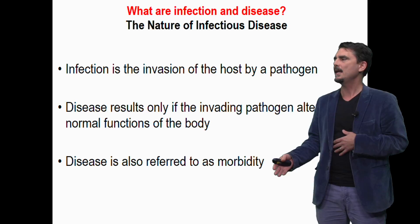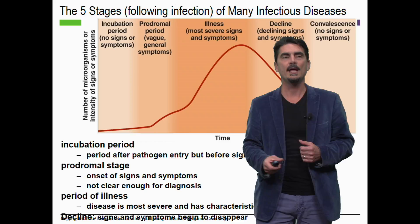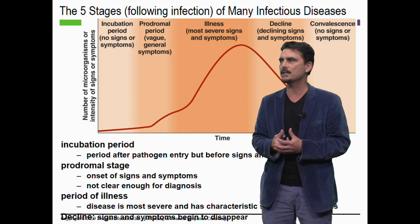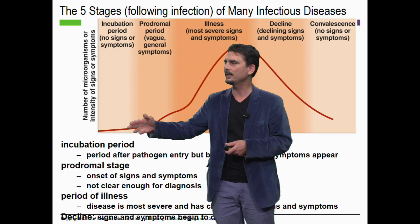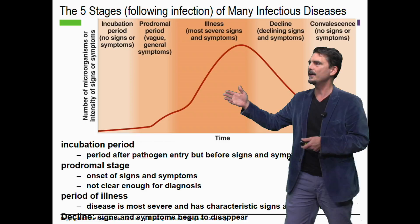When you have disease, that's also called morbidity. One of the exercises we'll look at in this class is the morbidity and mortality weekly reports from the CDC. Going back to the image of the five stages of many infectious diseases — from the incubation period, where there are hardly any microorganisms and no signs or symptoms, through the prodromal and illness stages — what's going on for the microbe to reach very high numbers and make you sick?